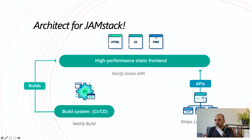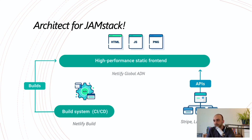Those static files are delivered to the user's browser. Whenever the user clicks something dynamic, the front-end calls APIs — for example, Stripe for payments (a SaaS offering that helps you deliver projects much faster), Lambdas, or other backend APIs.